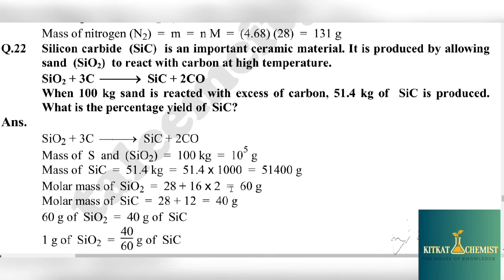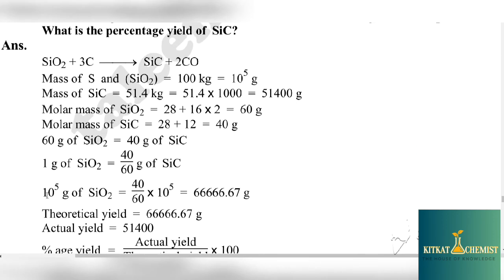Now we will find the molar mass of silicon carbide: 28 plus 12 equals 40 grams. From the balanced equation, if you have 60 grams of SiO2, then you get 40 grams of SiC. If you have 1 gram of SiO2, then SiC is 40 divided by 60. If you have 10 raised to power 5 grams, then we multiply: 40 divided by 60 times 10 raised to power 5. The answer is 66,666.67 grams. This is the theoretical yield which we calculate with the balanced equation.